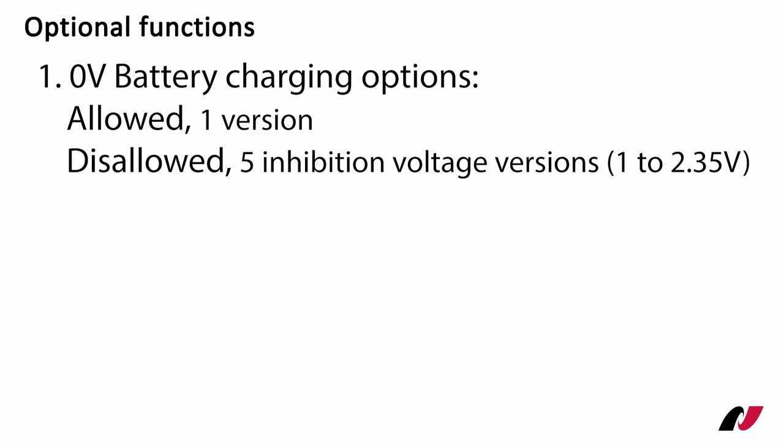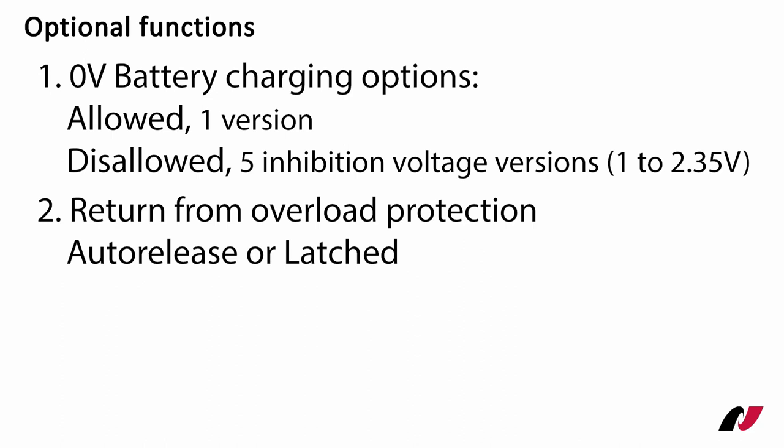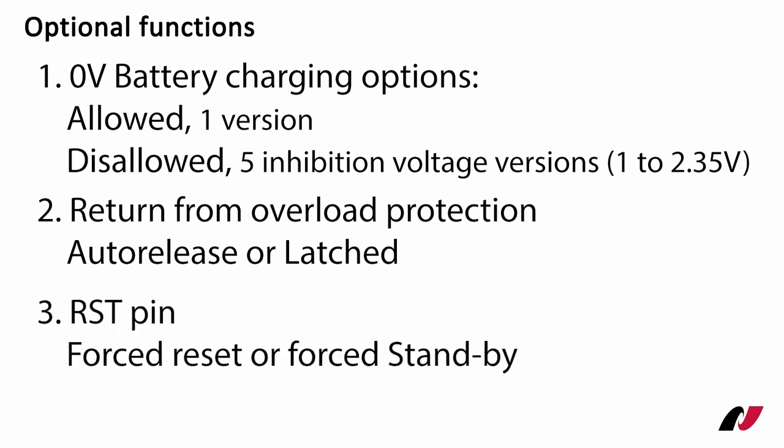Optional functions are available per product version. The first option is 0V battery charging, which offers the possibility to allow or disallow the battery to recharge from a deep discharged state. The battery recharge inhibition voltage can be selected in five options from 1 to 2.35 volts. Second option is to select between auto release and latch release from overvoltage, undervoltage, and discharge overcurrent status. The third option is to select the function of the RST pin as described before.